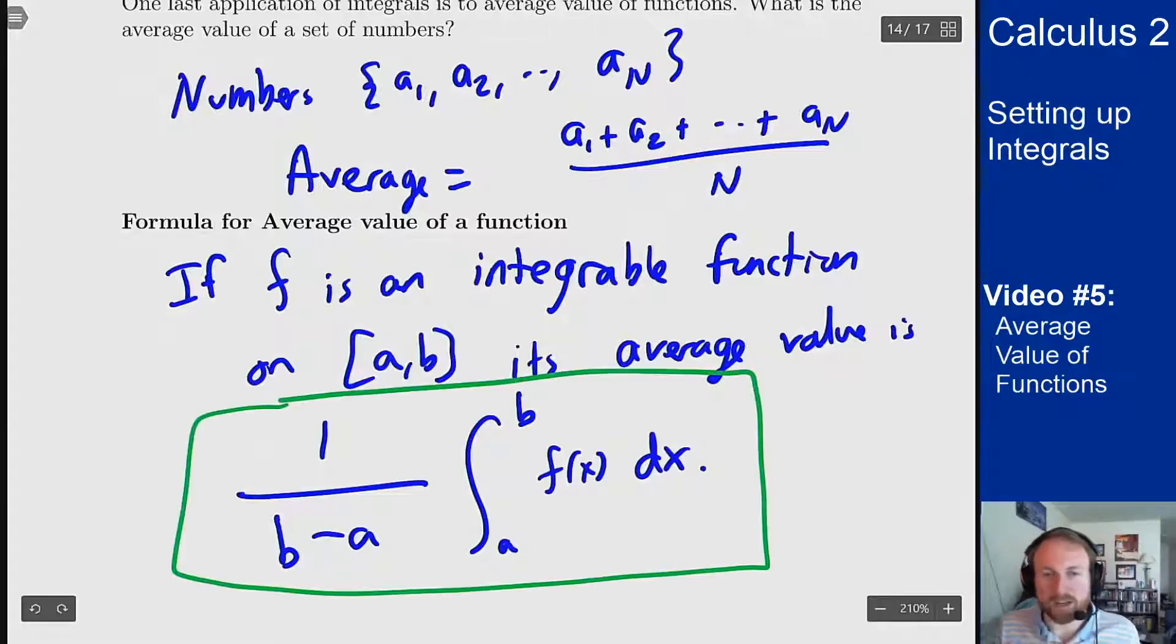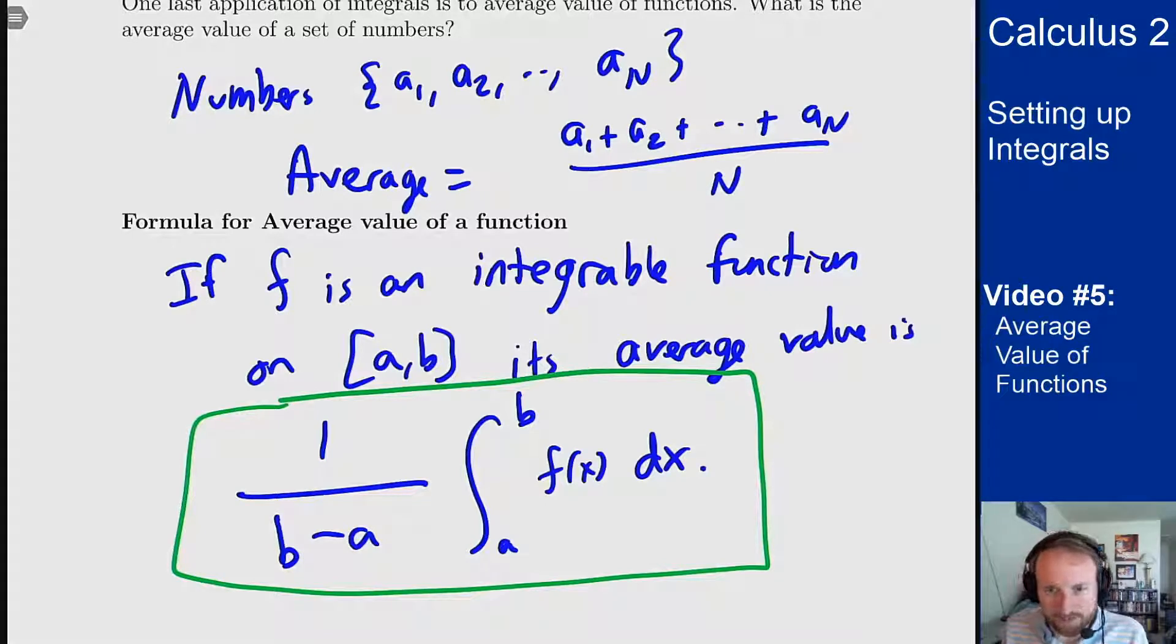And if you look at it, this is pretty similar to the formula we have for averages of numbers, right? I'm adding up f on this interval like adding up the set of numbers and then dividing by how big the interval is or how many numbers that I have. So I integrate from a to b and I divide by the length of the interval b minus a. And that's what we define as the average value of this function on this domain.